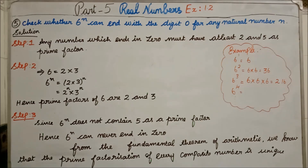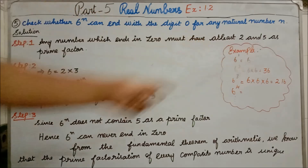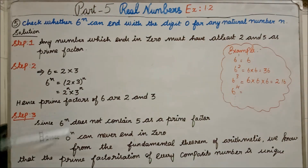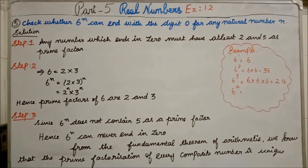One more time: if any number wants to end with 0, it must compulsorily have the factors 2 and 5. The question is about 6^N. The number 6 has factors only 2 and 3 — it does not have the factor 5. So, since 6^N does not contain 5 as a prime factor, 6^N can never end in 0 by the Fundamental Theorem of Arithmetic.